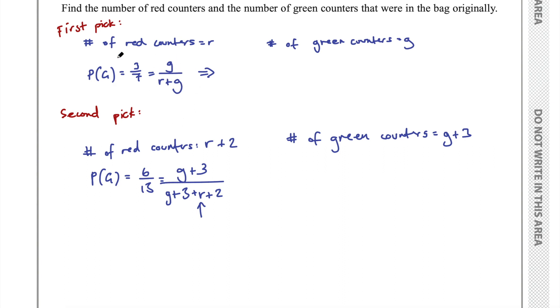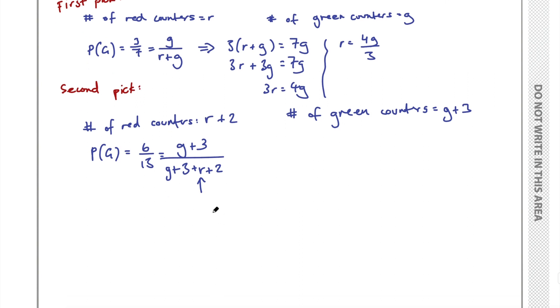So having a look at this equation here, I want to rearrange this in terms of R. So I would cross multiply. This is going to be 3 times R plus G equal to 7 times G. Expand the brackets, that'll be 3R plus 3G equal to 7G. And then subtract that 3G, it's going to be 3R equals 4G. And then divide by 3, so R will equal 4G on 3.